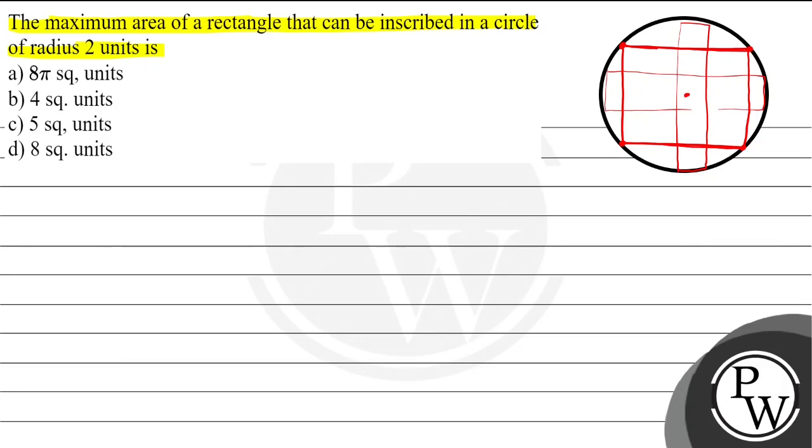The radius of the circle is given as r equals 2 units. Now I'll write down a direct formula for this question. We can derive it, but for DCET exams, using the formula directly will save time.